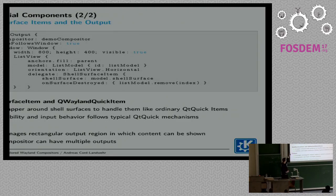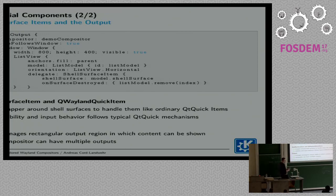It handles visibility and input. I can deactivate all the input stuff, I can hide it, I can show it — it's really acting like a typical item. And of course I need an output — that's simply the rectangular area where I show my compositor's content. And I can have multiple of them.